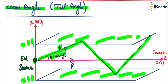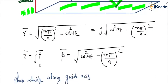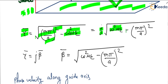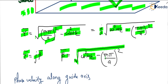The phase constant along the propagation direction is beta, but the phase constant along the guide axis is beta bar. We already discussed gamma bar — it is equal to the square root of (mπ/a)² minus ω²με. Taking minus common, the square root of minus is j. So j times the square root of ω²με minus (mπ/a)². So gamma bar equals j times beta bar, and beta bar equals the square root of ω²με minus (mπ/a)².